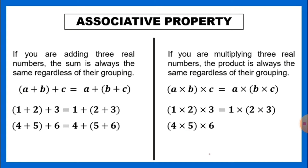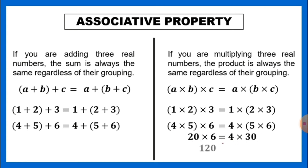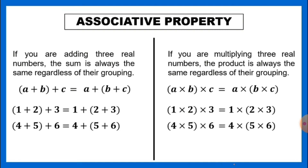Another example: (4 times 5) times 6 equals 4 times (5 times 6). We multiply 4 times 5 to get 20, then 20 times 6 equals 120. On the other side, 5 times 6 is 30, then 4 times 30 is also 120. Still the same result — that is the concept of associative property.